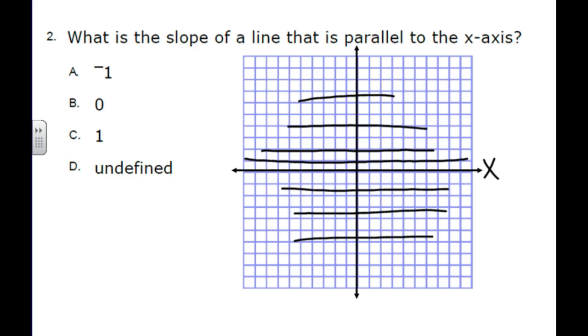This is basically kind of a definition type thing. What horizontal line, because we're talking about all of these are horizontal. What is the slope of a horizontal line? The slope of a horizontal line is zero. So, you can choose B with confidence if you remember that the slope of every horizontal line is zero.